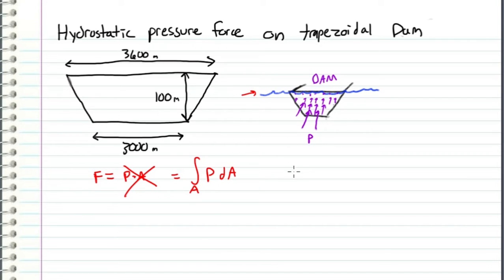From physics we know that p equals ρgh. Now let's find an expression for dA. Since any band along this trapezoid is at constant depth,